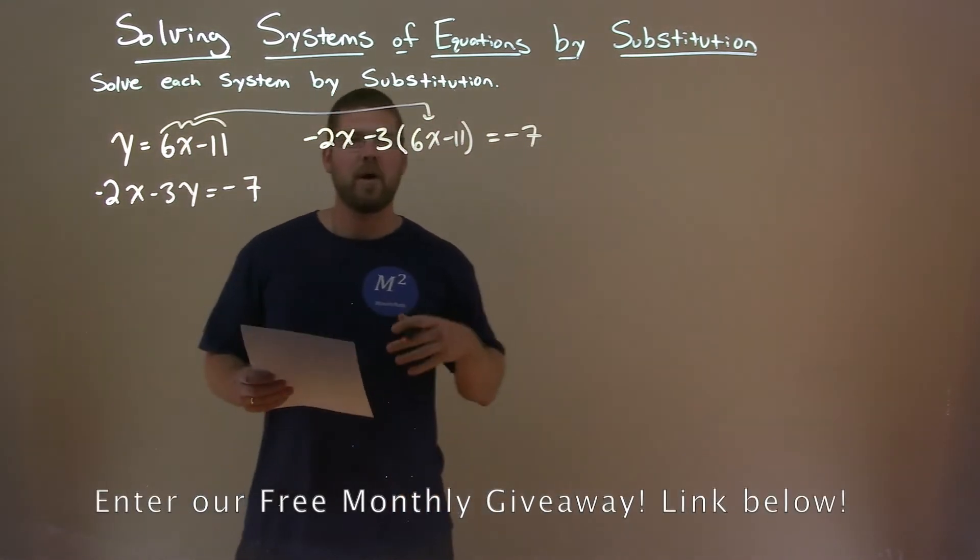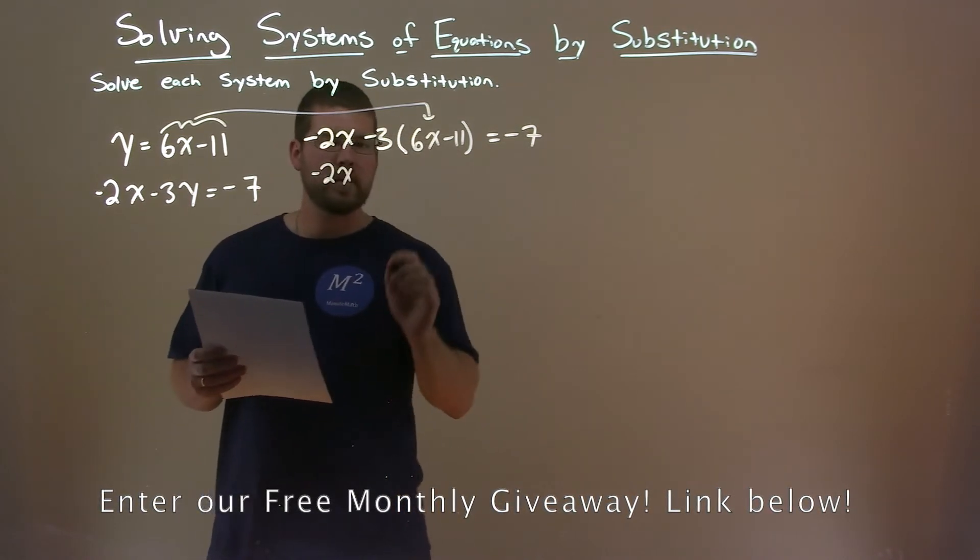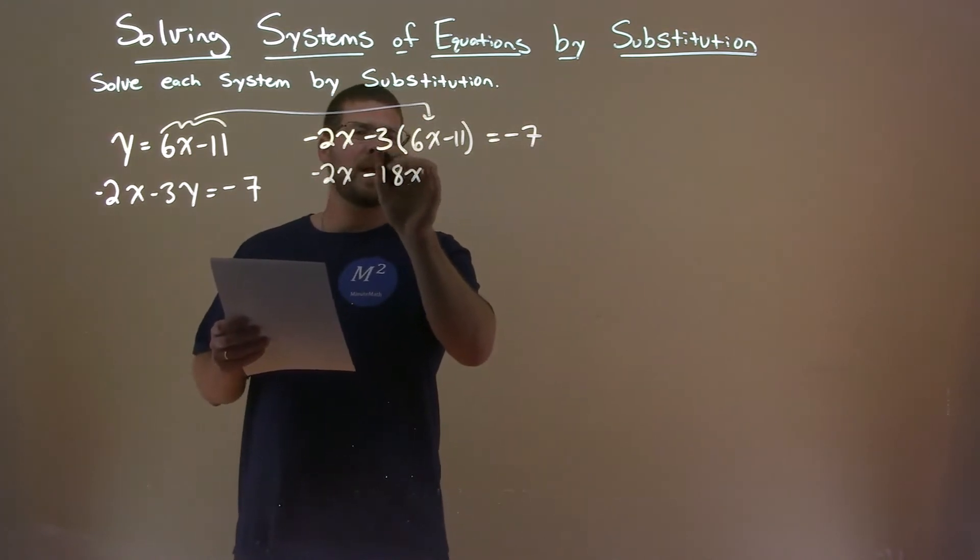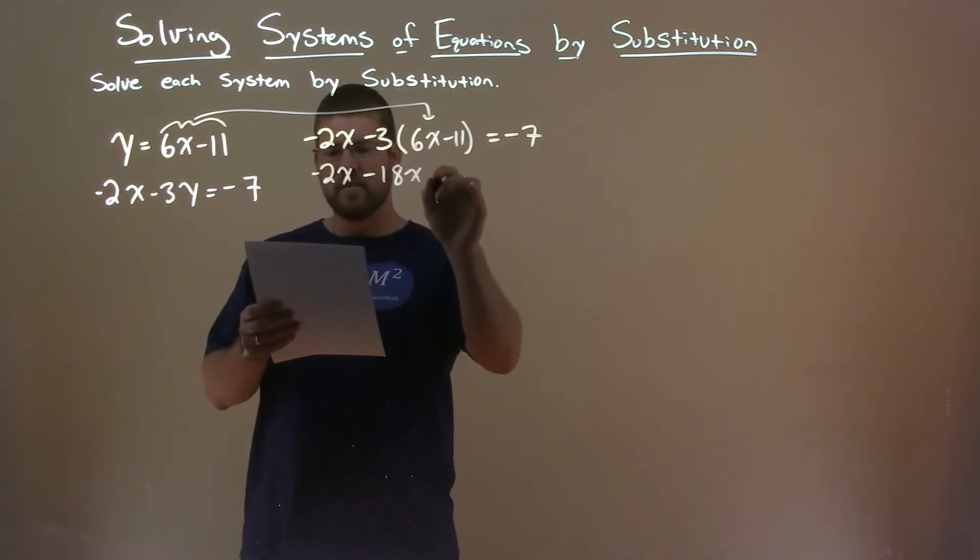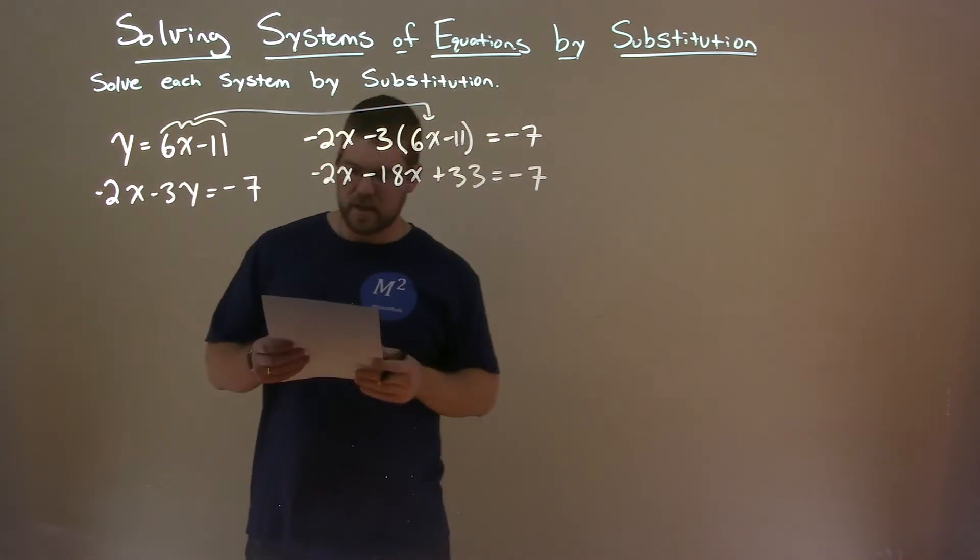Now I need to solve for x. Minus 2x here. Distribute the minus 3, and we have minus 18x. And then minus 3 times negative 11 is a positive 33. That equals negative 7.